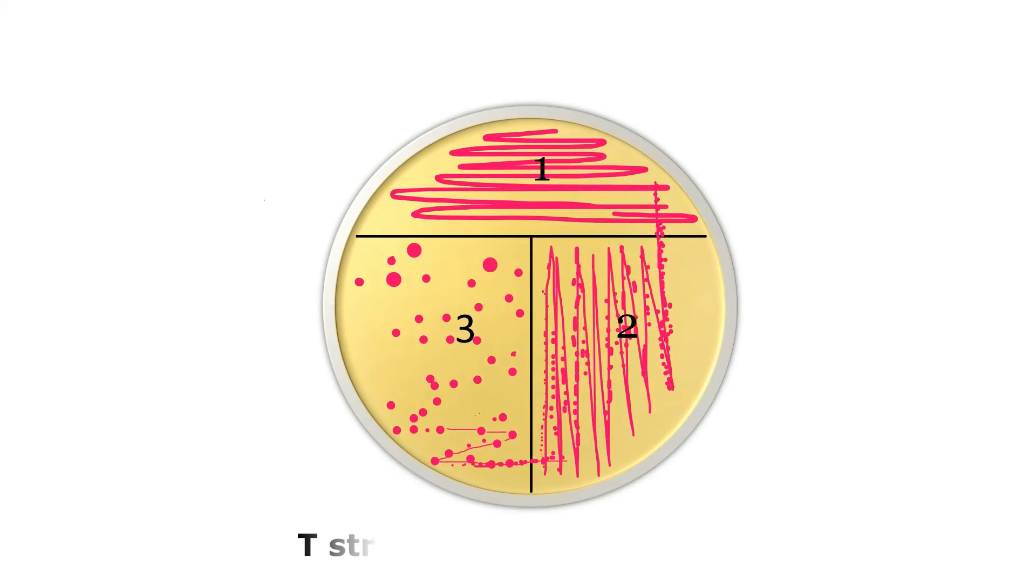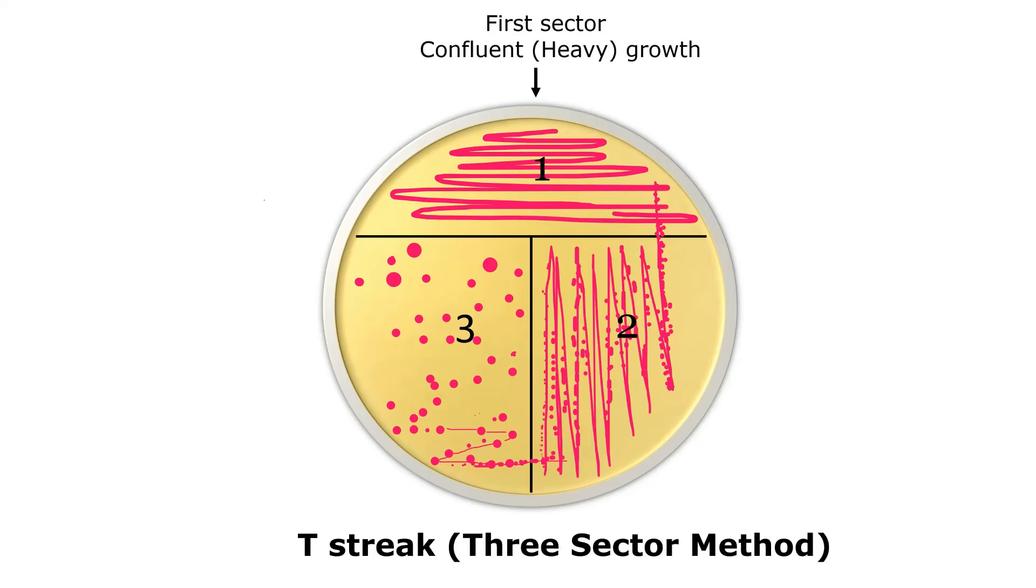Initially there is heavy confluent growth of bacteria in the first section. In the second section, the number of bacterial cells gets fewer but still there are no isolated colonies. In the third section, the growth is very less and we get isolated colonies as desired.